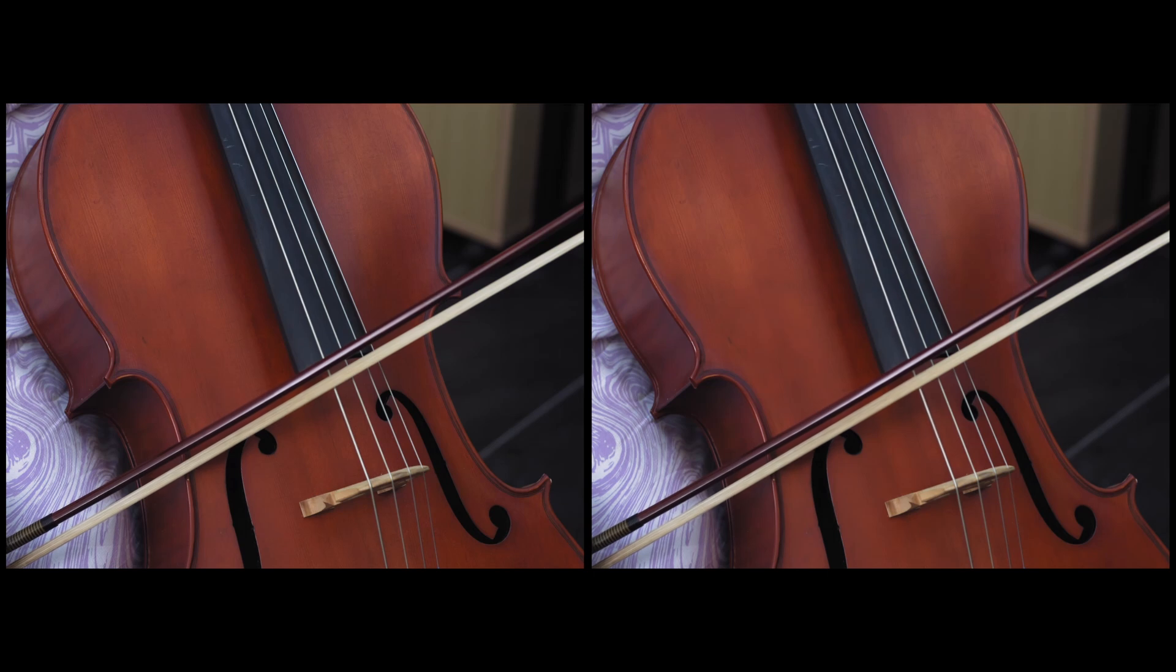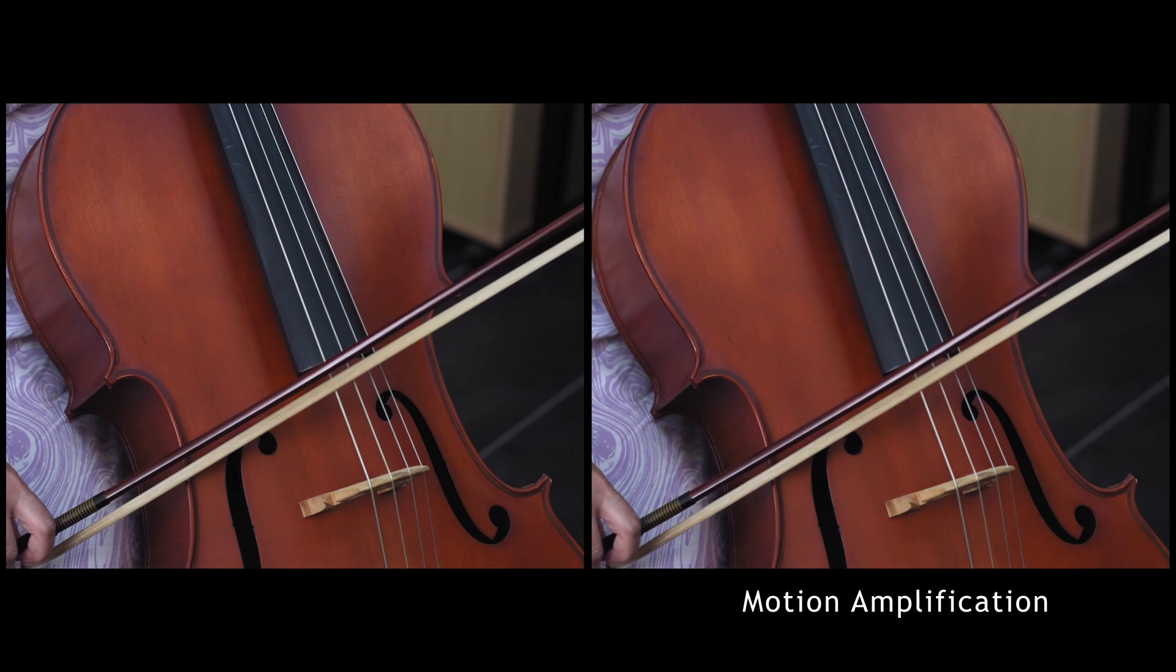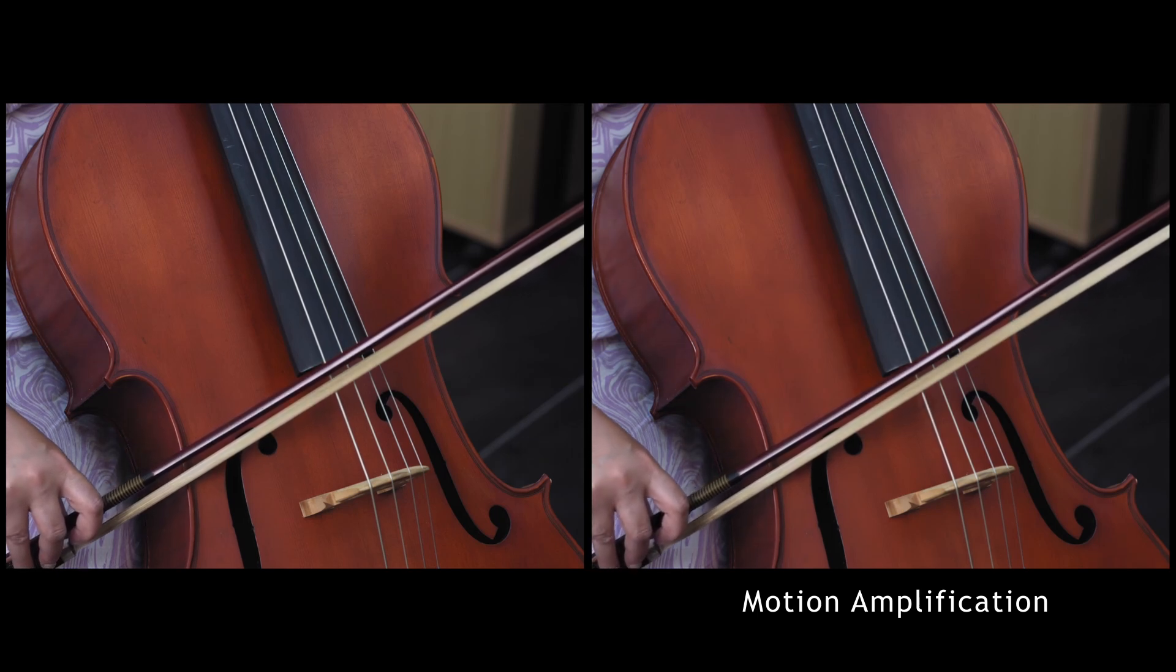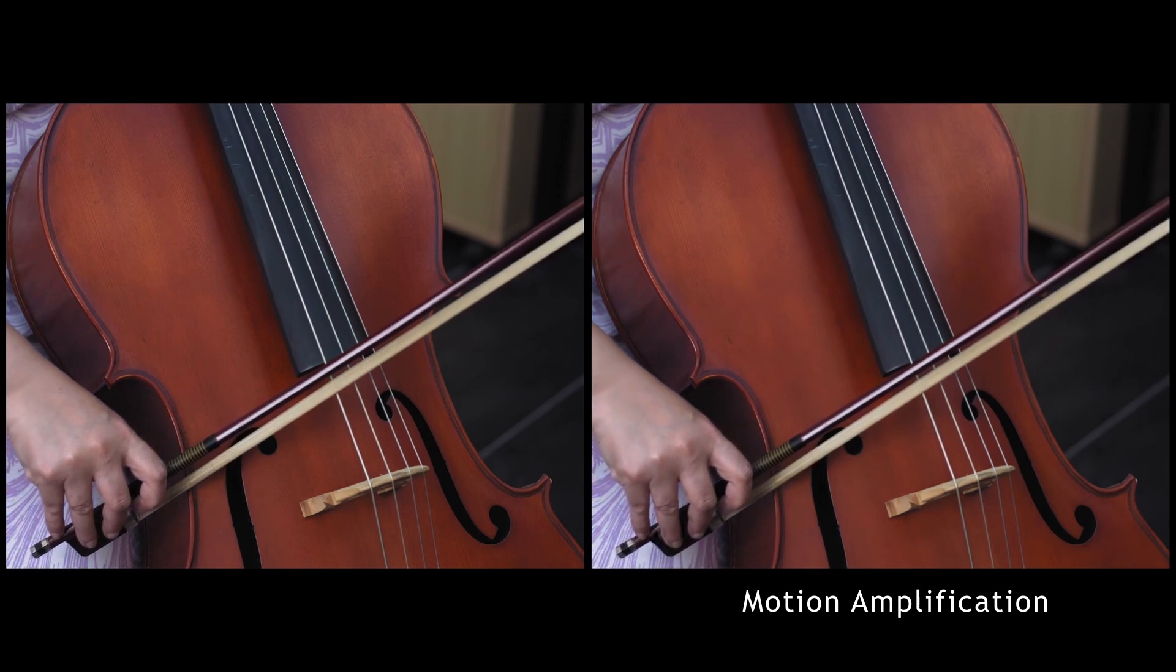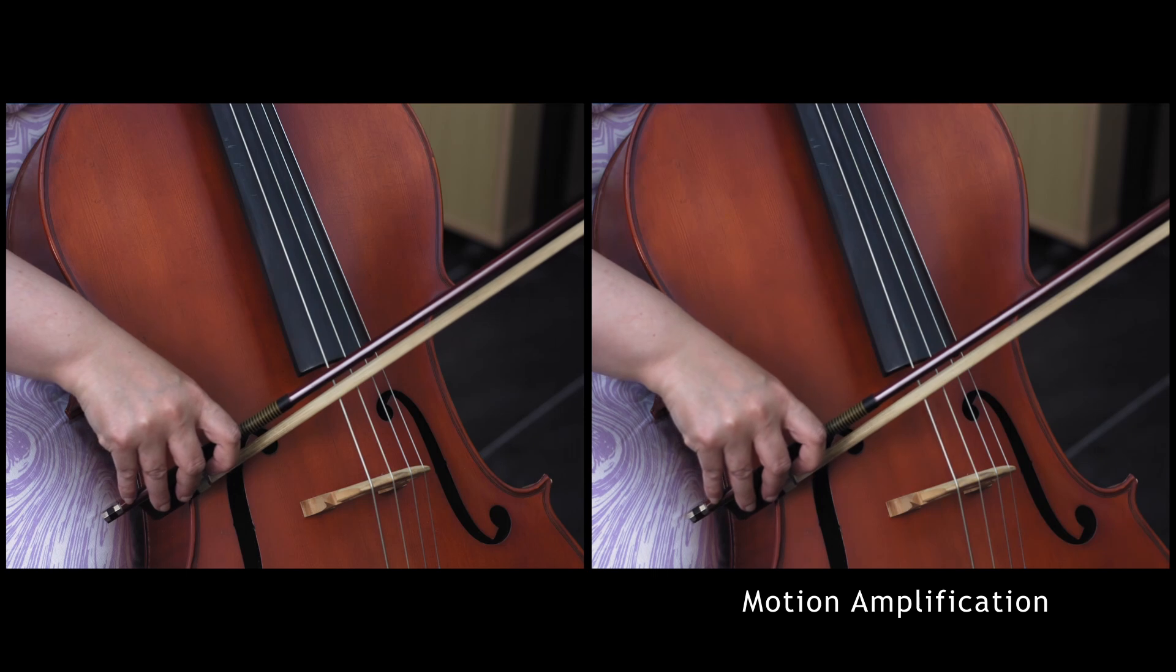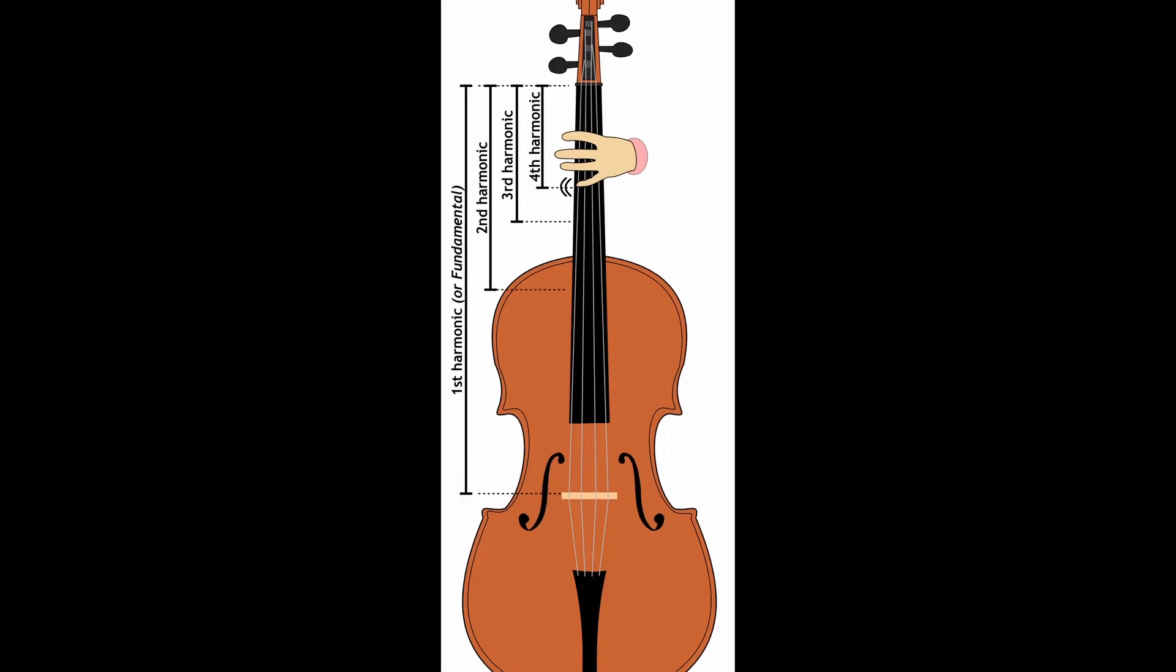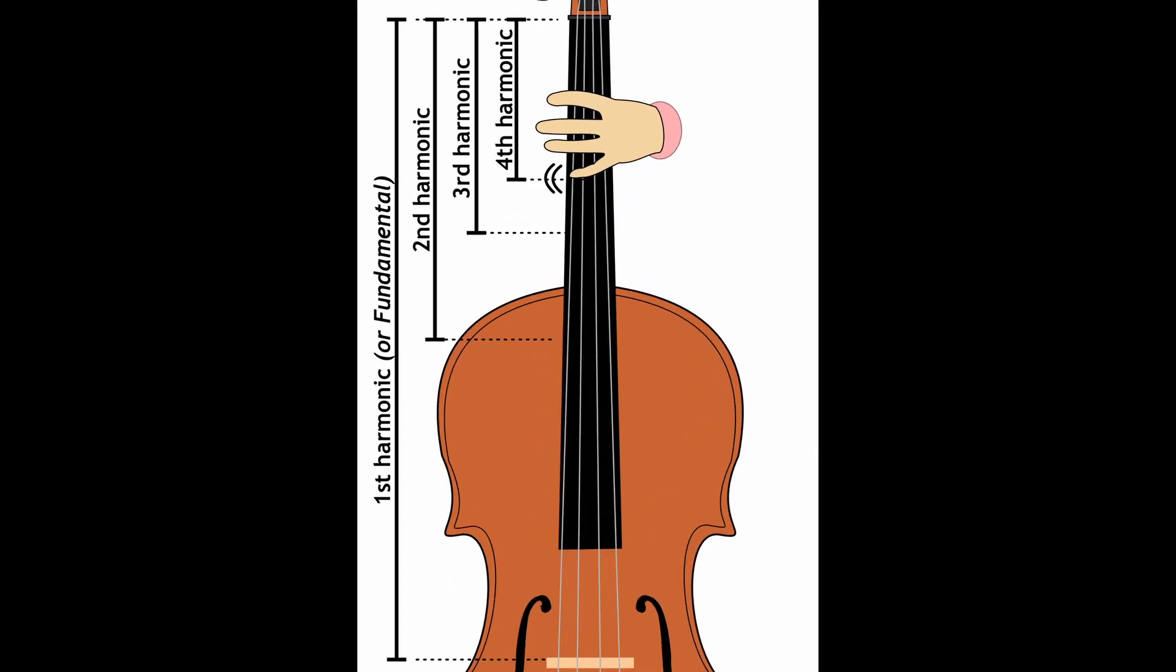In this particular video, the footage on the right has had motion amplification added, which makes the string movements more obvious. Stringed instruments can play harmonics, that is, we can manipulate the string to play the second, third, fourth and possibly a few more harmonics. These sound different, a more ethereal sound, and this particular harmonic note that you can hear being played is on the low C string. I had my finger gently touching the C string at the F position, or at the quarter point of the string.